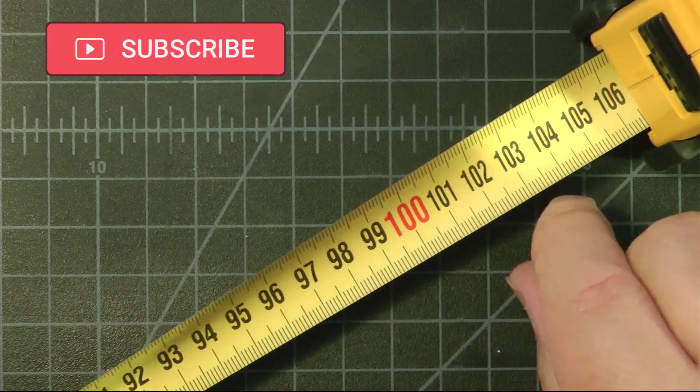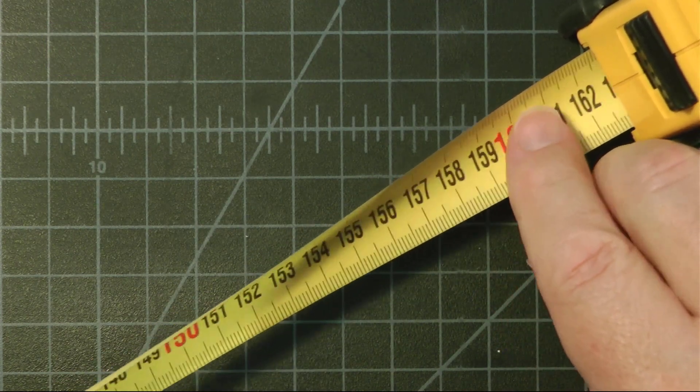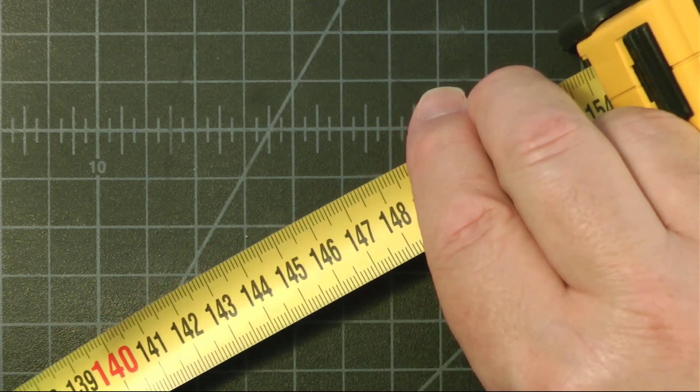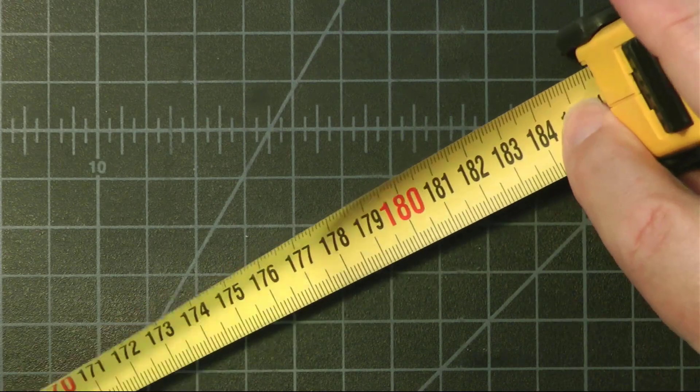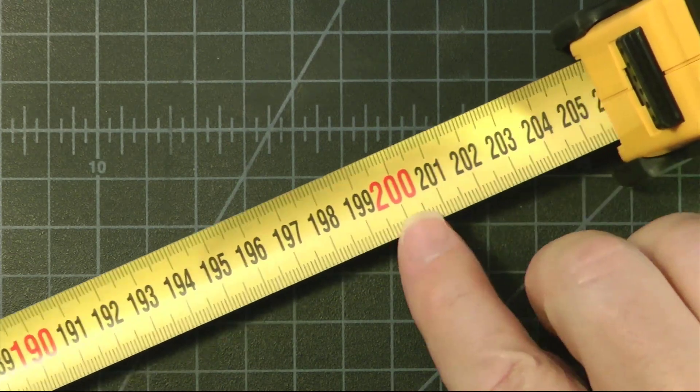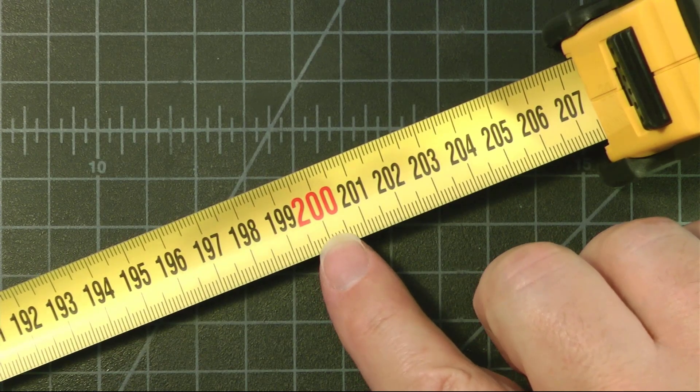As we go on, the numbers simply increase. There's 150 centimeters, 180. So there's 200 centimeters, or 2000 millimeters.